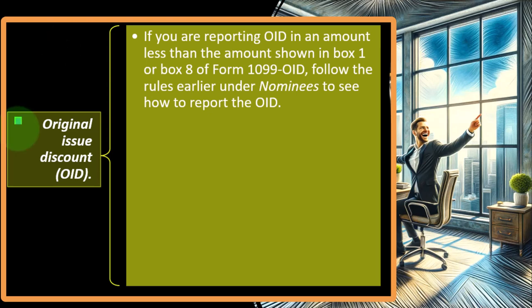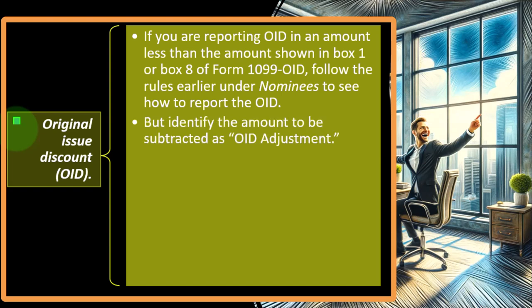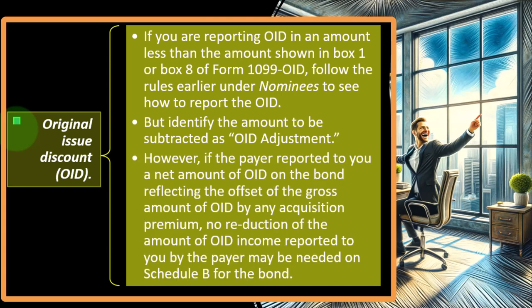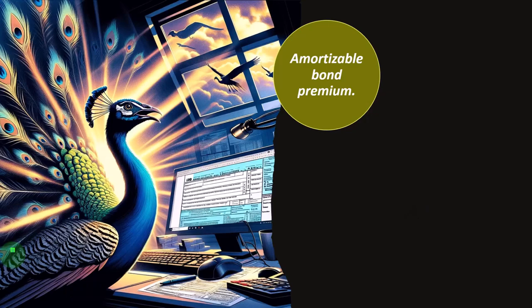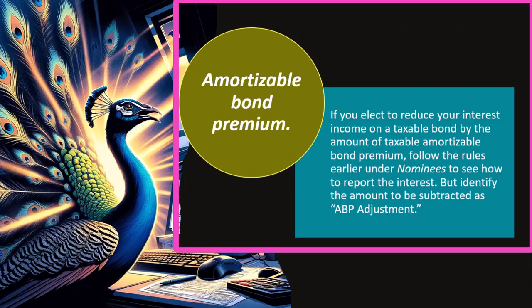Original Issue Discount (OID): if you are reporting OID in an amount less than the amount shown in box 1 or box 8 of Form 1099-OID, follow the rules under Nominees to report the OID, but identify the amount to be subtracted as 'OID Adjustment.' This is a similar concept and somewhat of an unusual situation as well. However, if the payer reported to you a net amount of OID on the bond reflecting the offset of the gross OID by any acquisition premium, no reduction of the OID income reported by the payer may be needed on Schedule B for the bond.